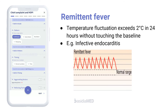Temperature spikes fall daily with diurnal variation of more than 2 degrees Celsius, but don't go down to normal. Remittent fevers are often associated with infectious diseases such as infective endocarditis, rickettsia infections, and brucellosis.